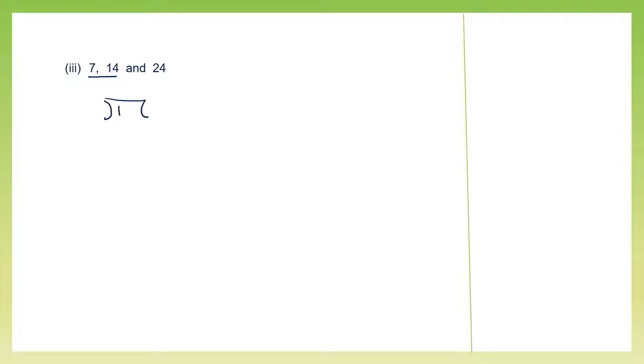Now here we have 3 numbers. What we can do is take the first two numbers first. We take the bigger number, put it in, and divide by the smaller number. 7 twos are 14, minus 0. So we've got 7 as the HCF of 7 and 14 only.